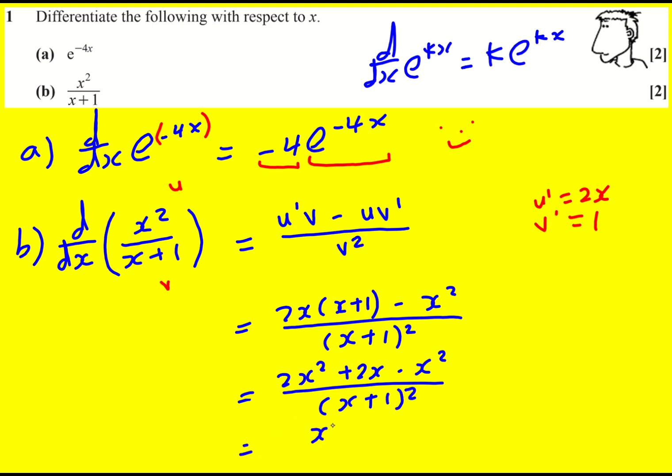Which becomes x squared plus 2x over x plus 1 squared. You could factorize out the x, but it's neat enough like this I think.